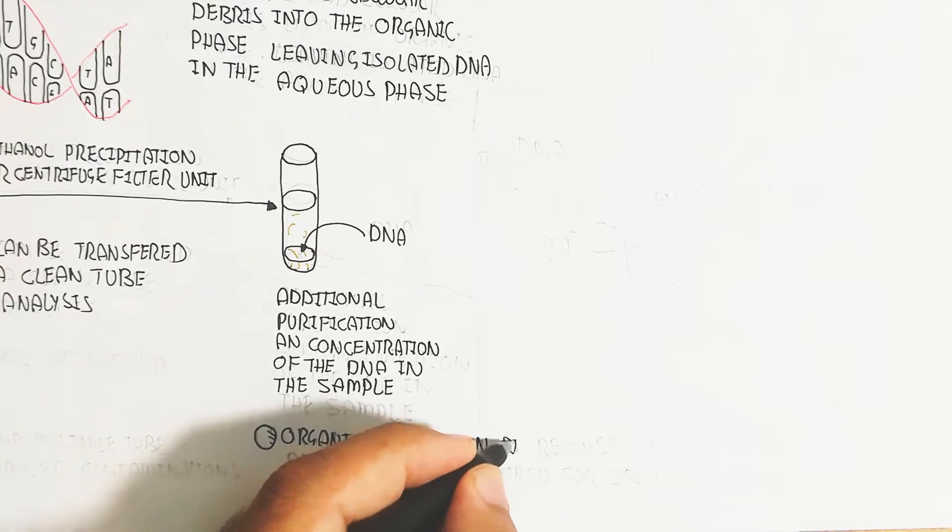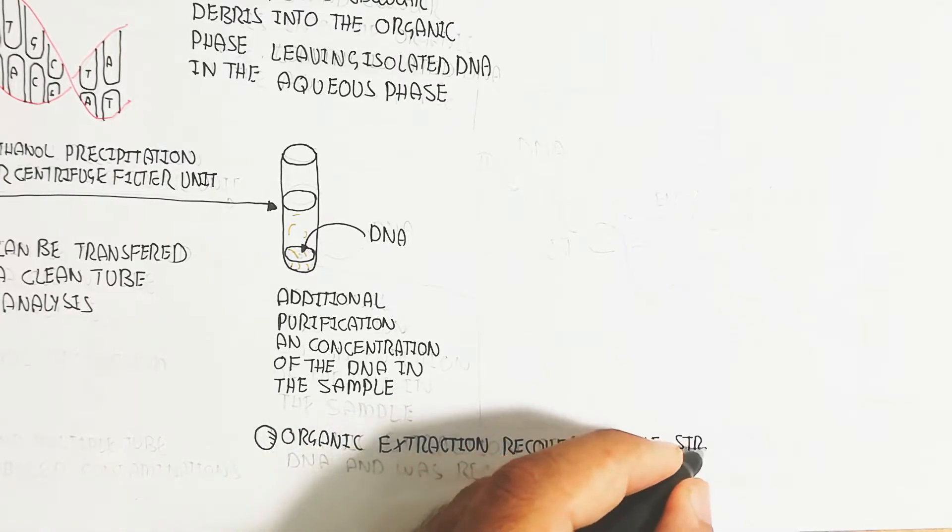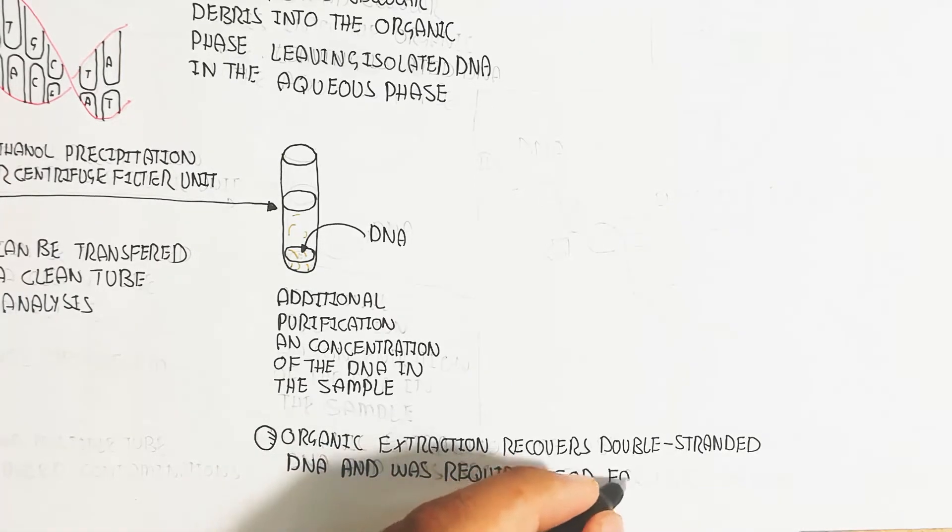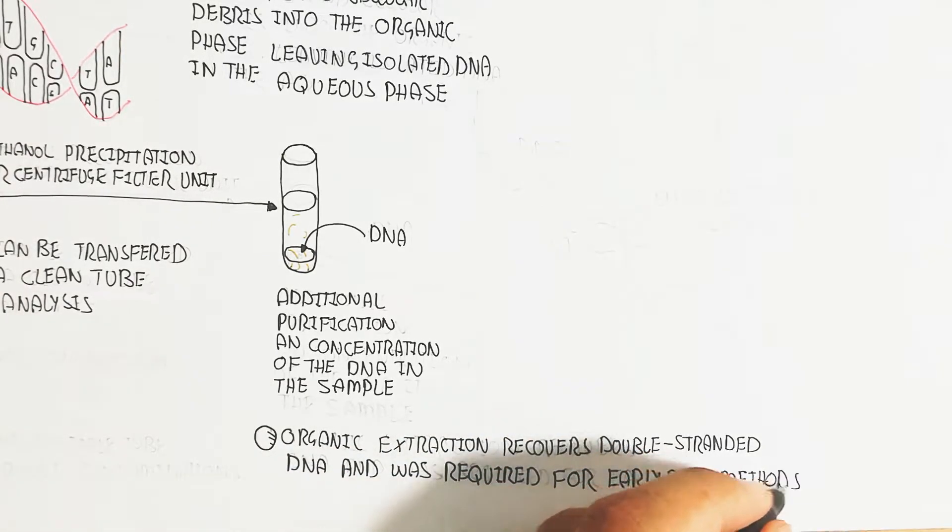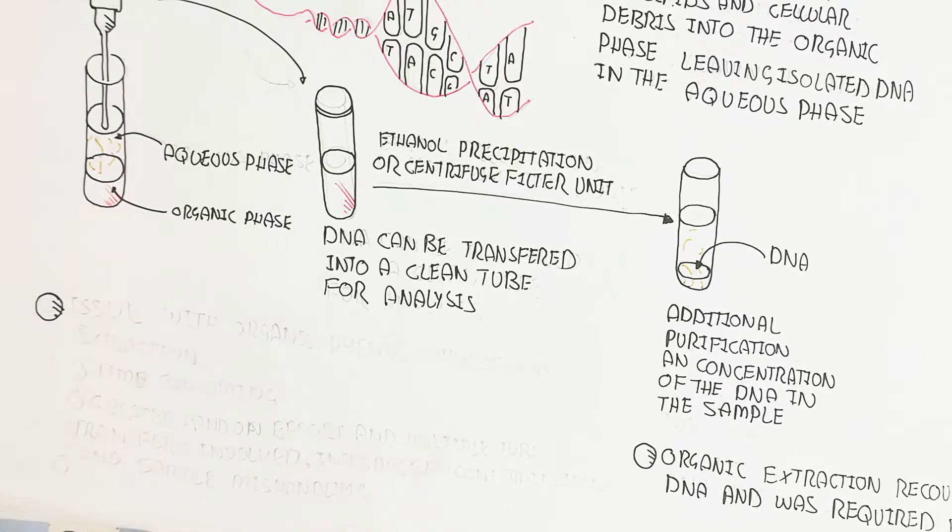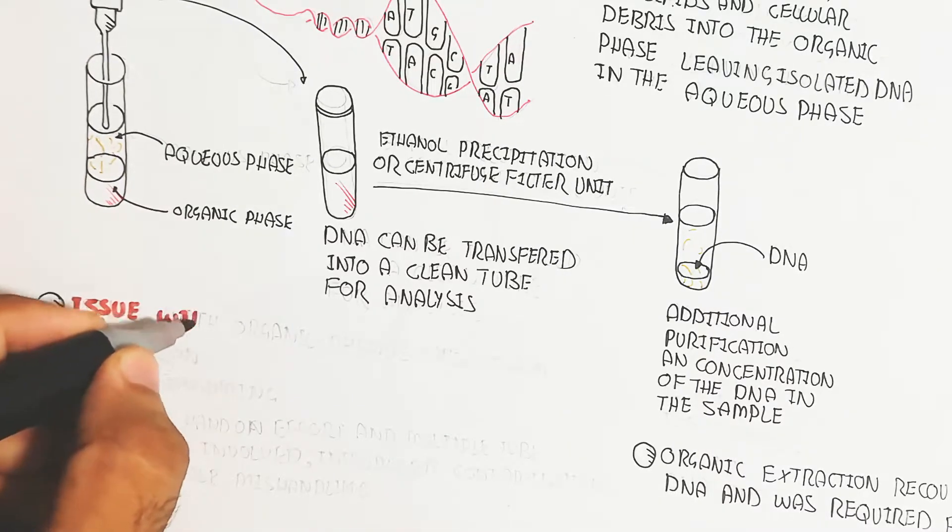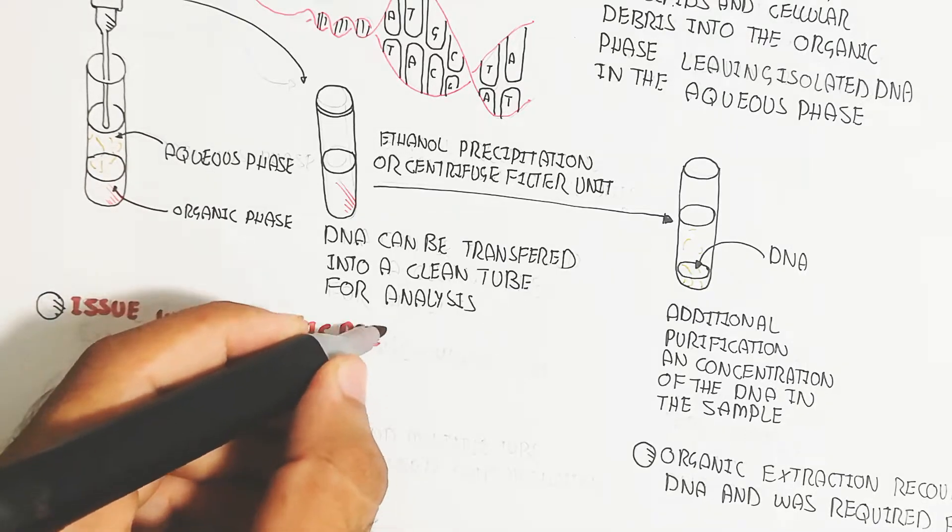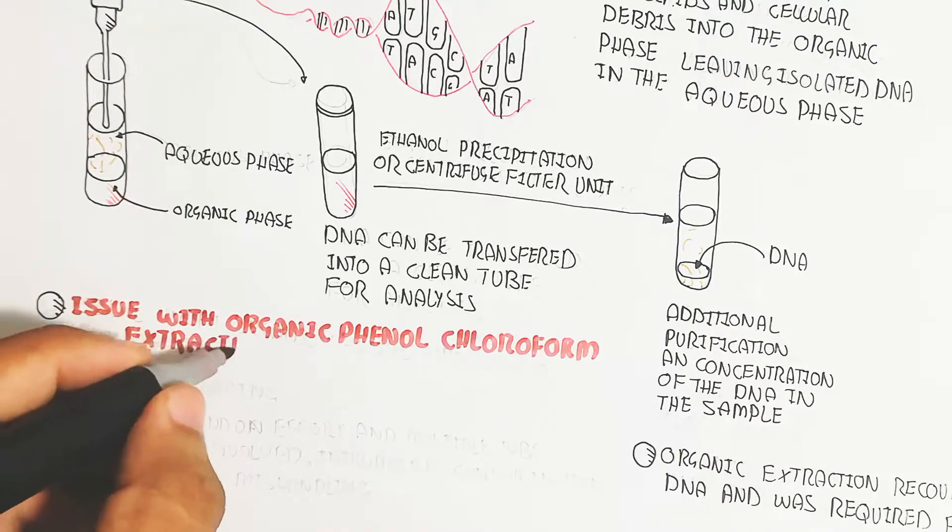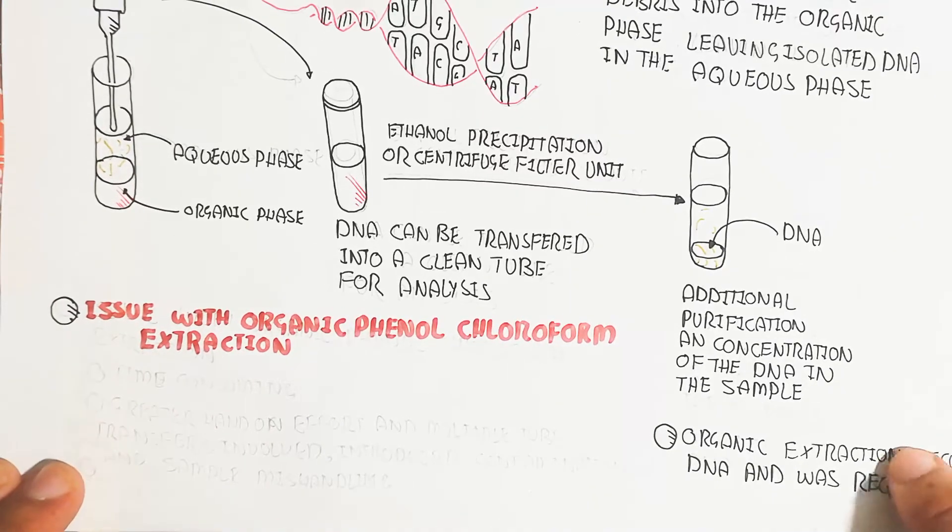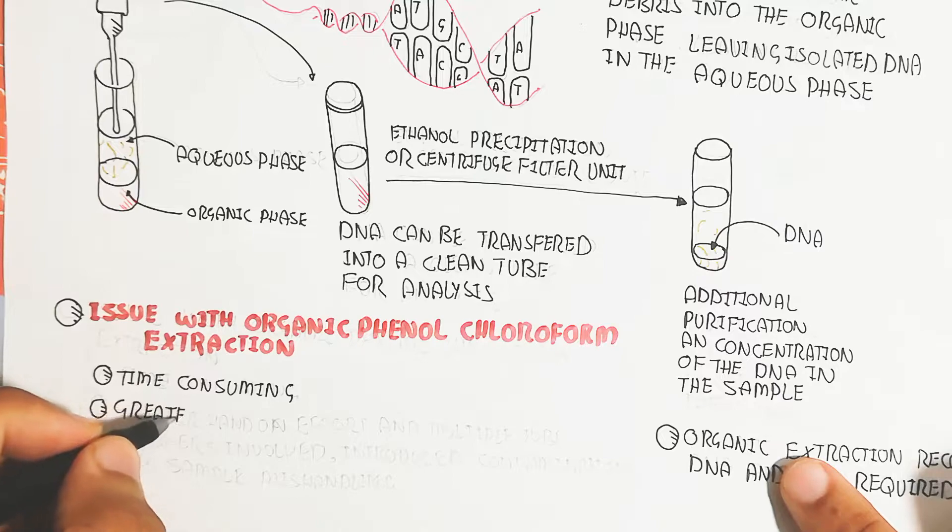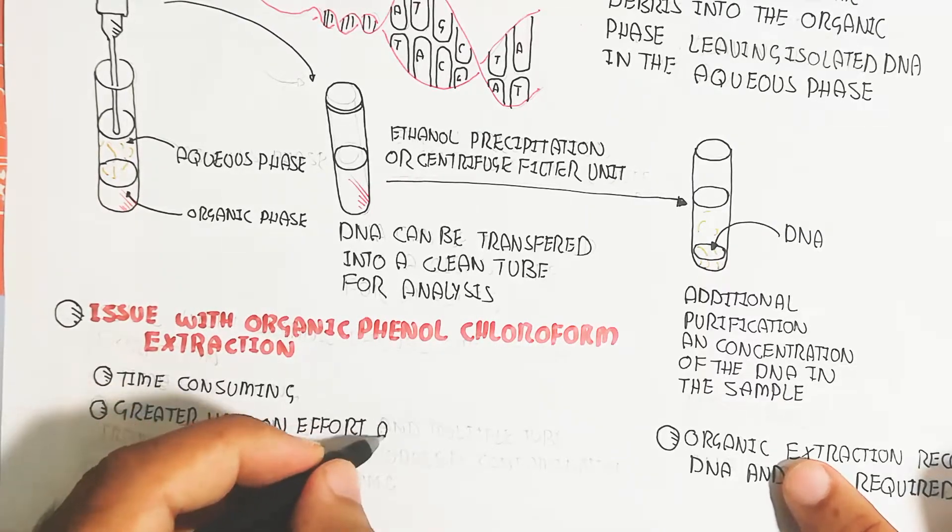Organic extraction recovers double-stranded DNA and was required for early restriction fragment length polymorphism methods. However, the issue with organic phenol chloroform extraction is that it is time consuming. That is why the process requires significant time, and we can reduce the time by using another method.